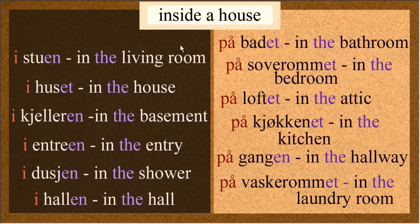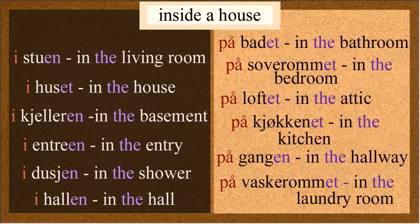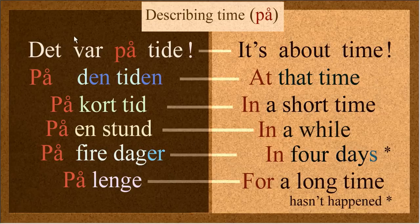Inside the house, I mentioned there are different rooms. På soverommet, right? Then i stuen, i huset, i kjelleren, i entreen, i dusjen, i hallen. And på badet, på soverommet, på loftet, på kjøkkenet, på gangen, på vaskerommet. It's almost always på for some rooms and almost always i for others. As you become aware of it and use it, after a while — just like the articles — it becomes something you don't even think about.